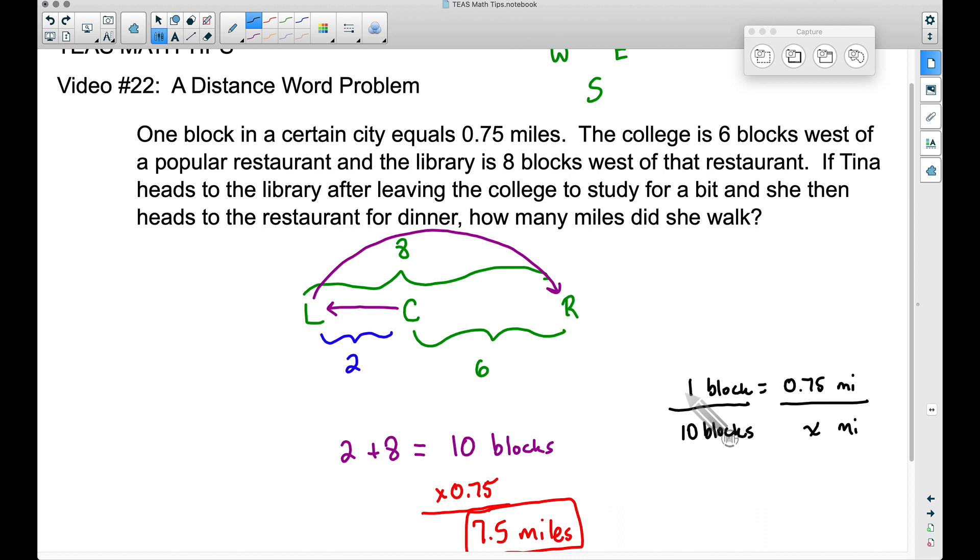And from here, if we cross multiply, taking the 1 times x, that gives us x. Setting that equal to the other cross product, 10 times 0.75 is 7.5. As you can see, we get the exact same answer.